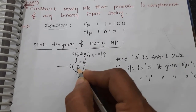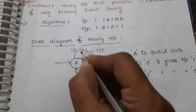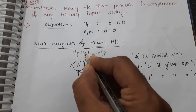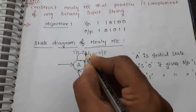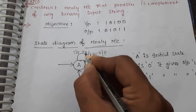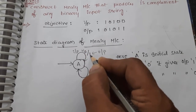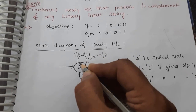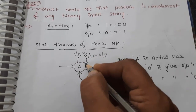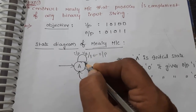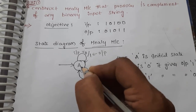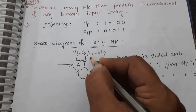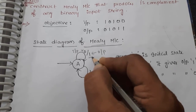Now we are at state A. If the input is zero, then we need to get its complement — that means zero should change to one. So when zero comes as input in this state, the output should be its complement, which means one will be the output.